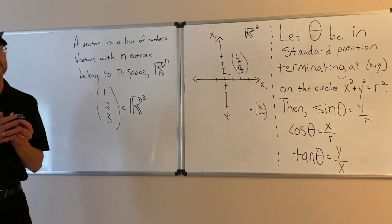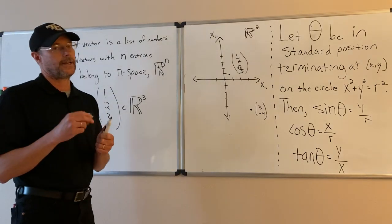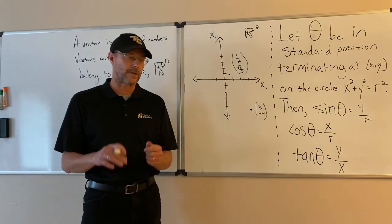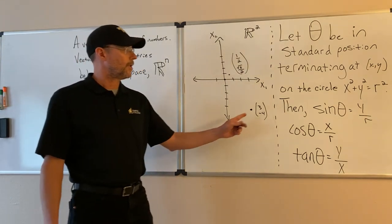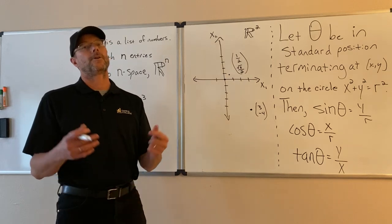Now we're going to limit our discussion to two-dimensional vectors. So that means they're just going to have two entries, very short lists. So for example, 3 negative 4 is a list of numbers. That makes it a vector, therefore it belongs to two-space.